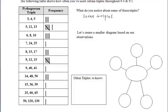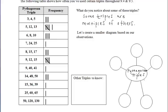That list does not contain all of the triples you have to know, but it does contain the essential ones. We noticed that some triples are multiples of others. So let's go ahead and fill in the diagram below.